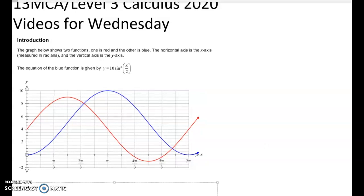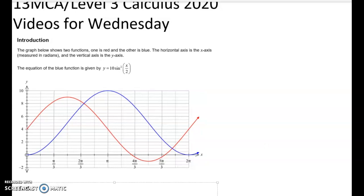So the first thing we're going to do is look at the whole thing and see what we need to do. We're given two graphs, one's red and one's blue. We've got an x-axis that goes out from zero to two pi, and then we've got a y-axis.